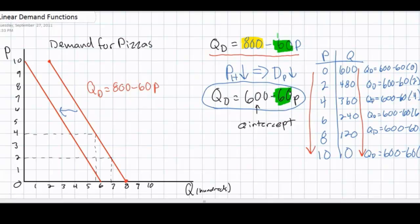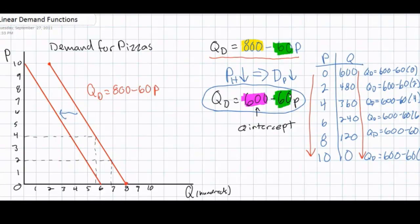Only our A variable has changed. The lower price of a substitute good caused the autonomous level of demand, the quantity demanded at a price of zero, to decrease. Even if pizzas were free, fewer people would demand pizzas now — 600 pizzas would be demanded at a price of zero, and the quantity demanded would fall as the price rose from $0 to $10. Our demand curve is shifted, but the slope remains the same. Notice that at each price, the quantity demanded is now exactly 200 units less than it was before the price of the substitute good declined.